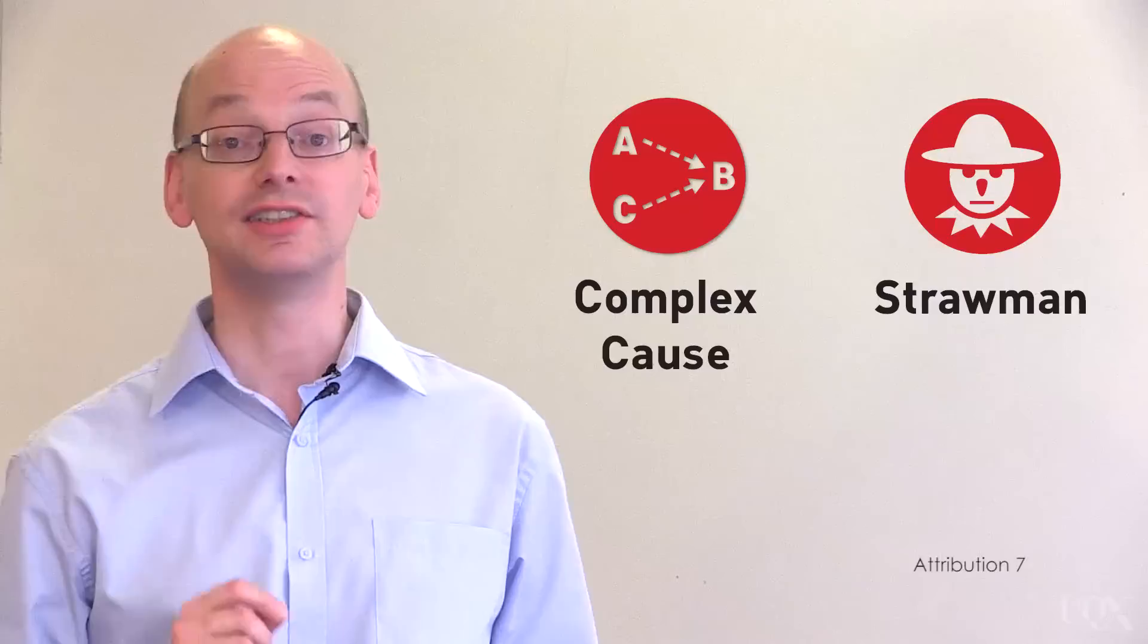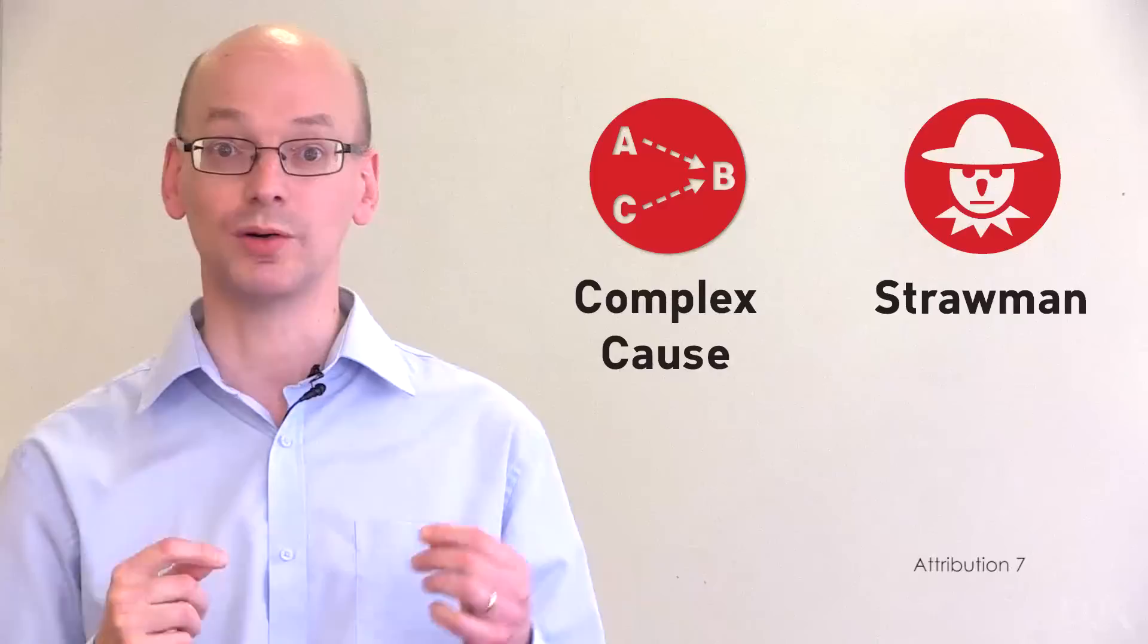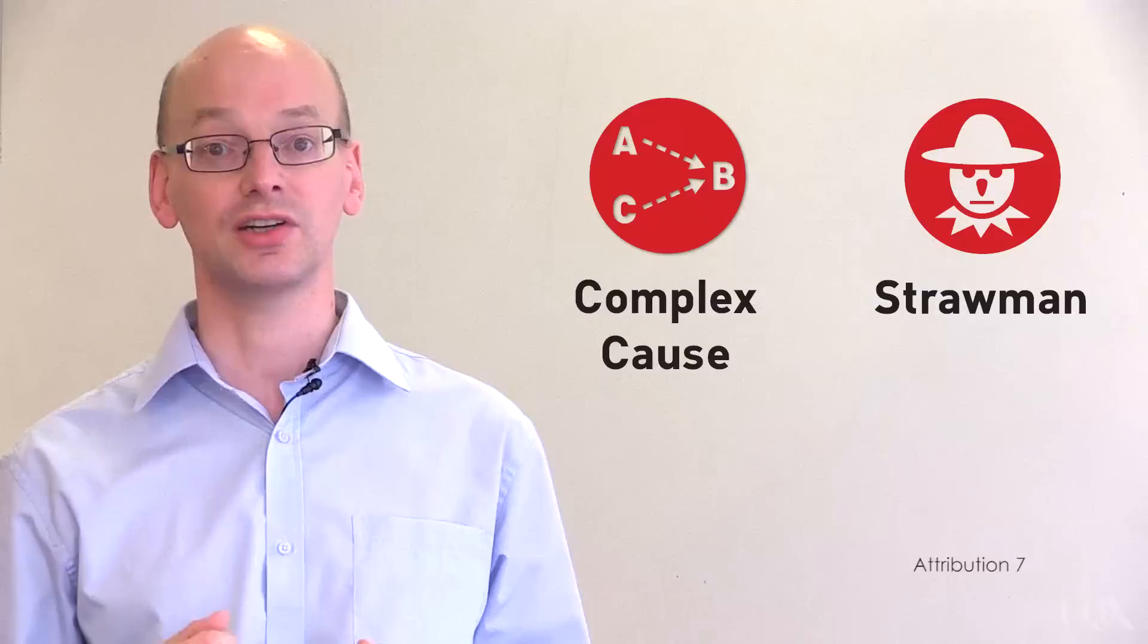The slowdown in warming has created a whole family of myths with different levels of sophistication. At one extreme, it's possible to argue that the hiatus should reduce our estimates of climate sensitivity. This is a genuine scientific argument, although the analysis we have just seen suggests that no reduction is required. At the other extreme, it is sometimes claimed that the hiatus disproves the role of CO2 in global warming. They claim that CO2 has increased, but the world hasn't warmed. This is an example of a straw man, and also a complex cause fallacy. Climate science doesn't claim that CO2 is the only factor which affects temperature.